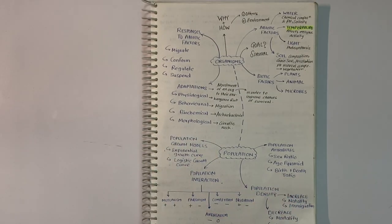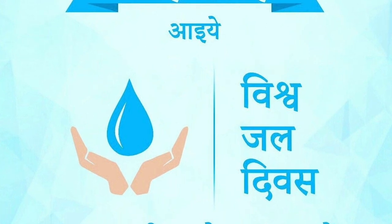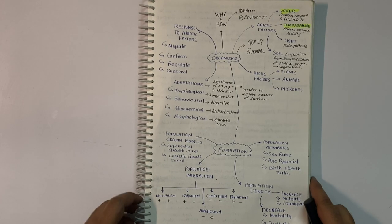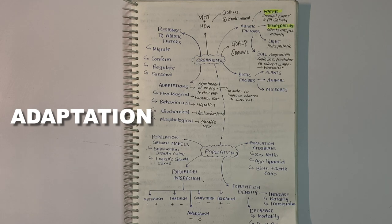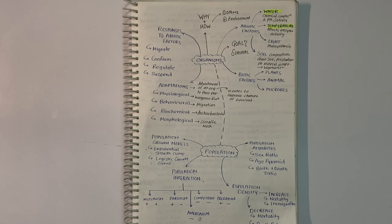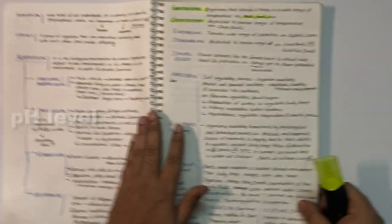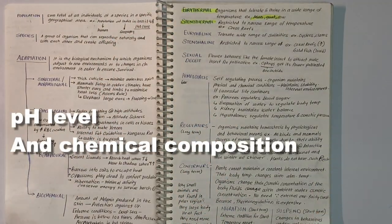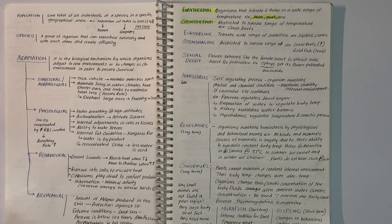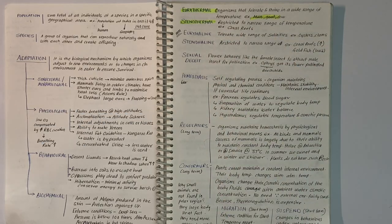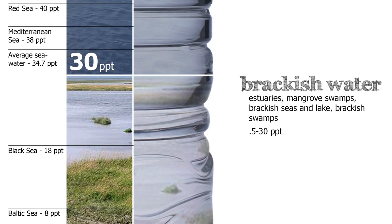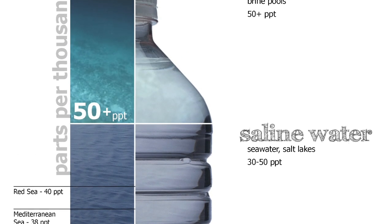The next important abiotic factor is water. Jal hi jeevan hai - water is life. Its availability is limited in desert requiring special adaptations. Productivity and distribution of plants is heavily dependent on water. For aquatic organisms, quality of water - chemical composition and pH - is important.